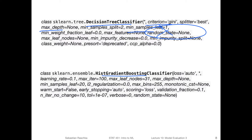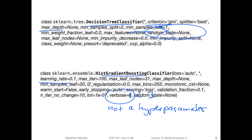Another example would be the gradient boosting classifier. Here, for example, a hyperparameter would be the learning rate. Something like the verbosity would not be a hyperparameter. Verbosity just determines how much information you see when you run the fitting — if you set it to one, two, or three, it will just show you more information when you fit the model. It's really not changing the model, just showing you more information. So that's an option you can choose, but it's not a hyperparameter. In other words, not all options are hyperparameters, but all hyperparameters are options.